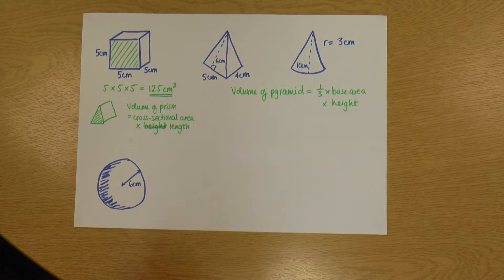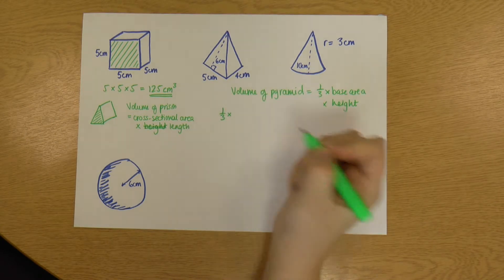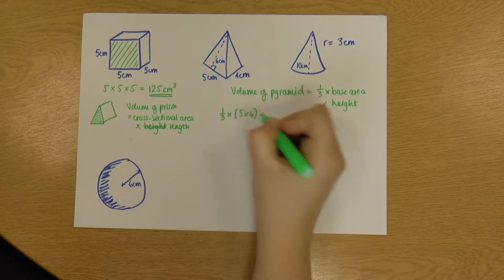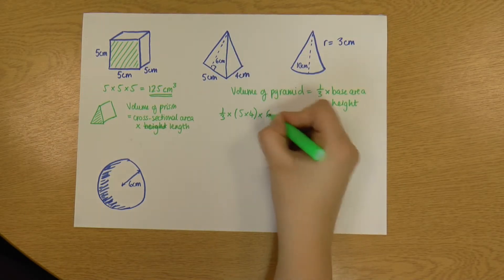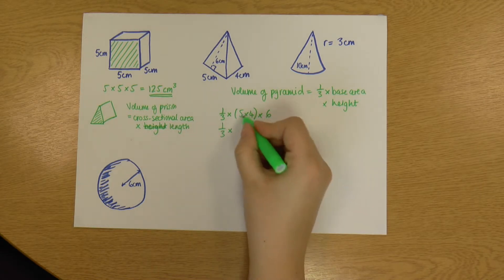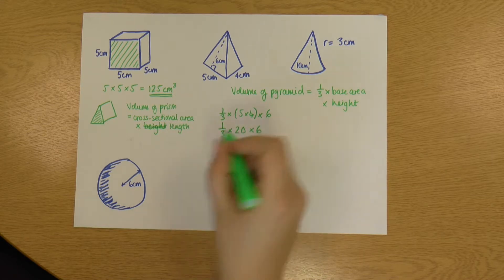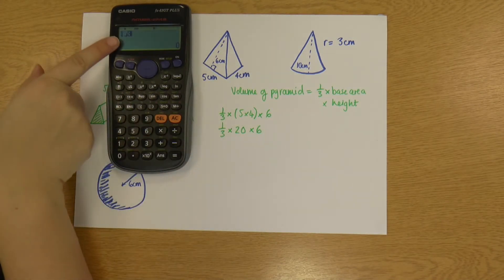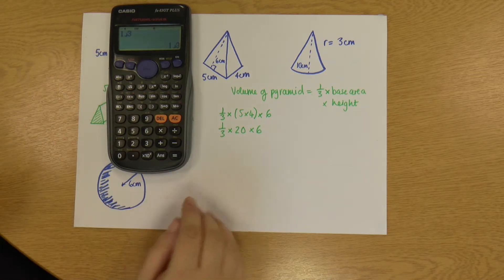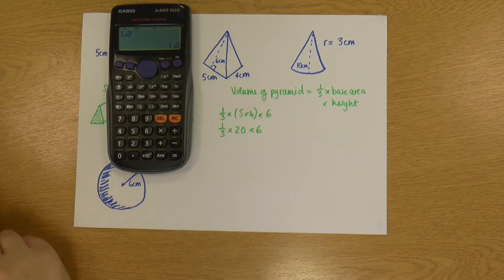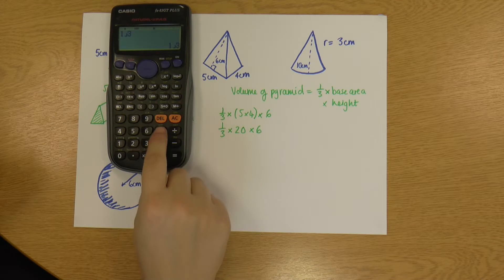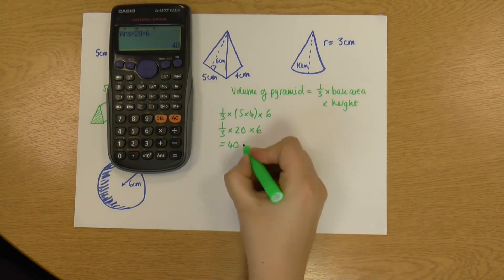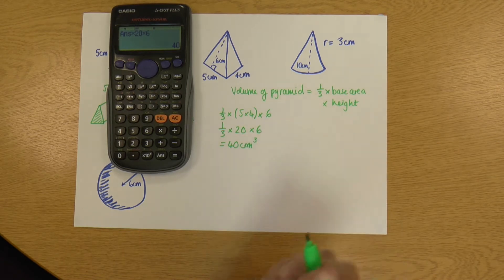Okay, so let's have a go at doing the pyramid. So it's a third times the base area. So my area of base is going to be a rectangle. So I'm going to do 5 times 4 times the height, which is 6. So a third times 5 times 4 is 20 times 6. And I'm going to grab my calculator. Okay, so I'm going to put it in as a fraction. So one third times 20 times 6. And that gives me my answer of 40 centimeters cubed. So again, it's units cubed.